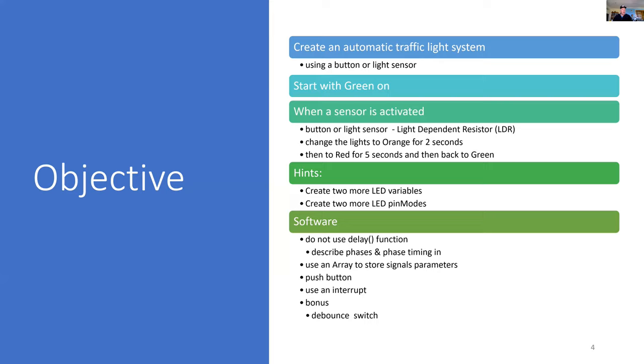At Korowa they were given a couple of hints on what to do, and I want to comply with their objectives but also make my coding as efficient as possible. So I'm not going to use the delay function because it wastes time and it allows me to do more things in the background. I'm going to use an array to store the signal parameters. The pedestrian push button is going to use an interrupt, and as a bonus I'd like to debounce the switch.